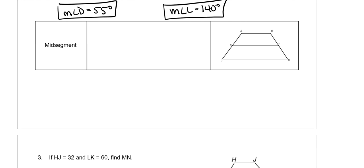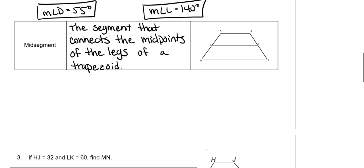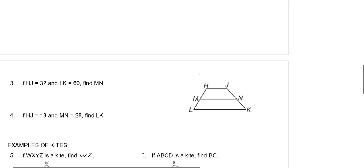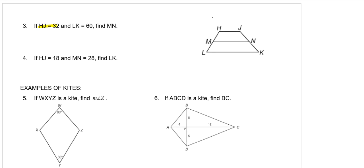A mid-segment is the segment that connects the midpoints of the legs of a trapezoid, and it's always equal to half the sum of the two bases. HJ is 32 and LK is 60, so those are B1 and B2. We do half of 32 plus 60: 32 plus 60 is 92, divided by 2 gives MN equals 46.